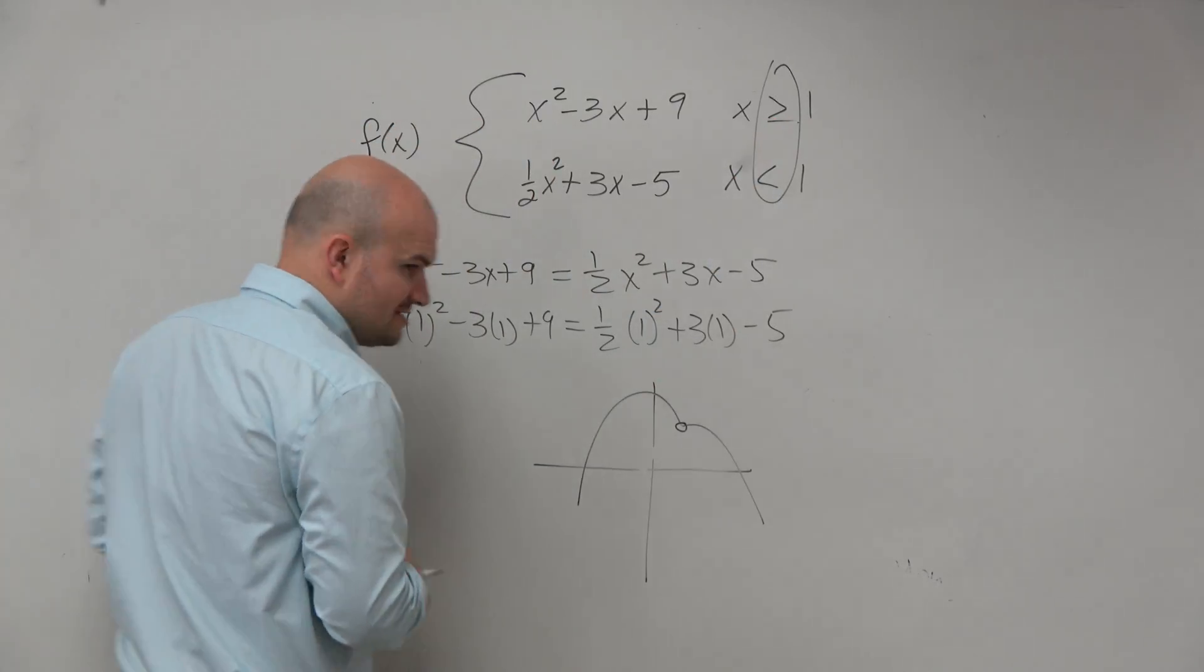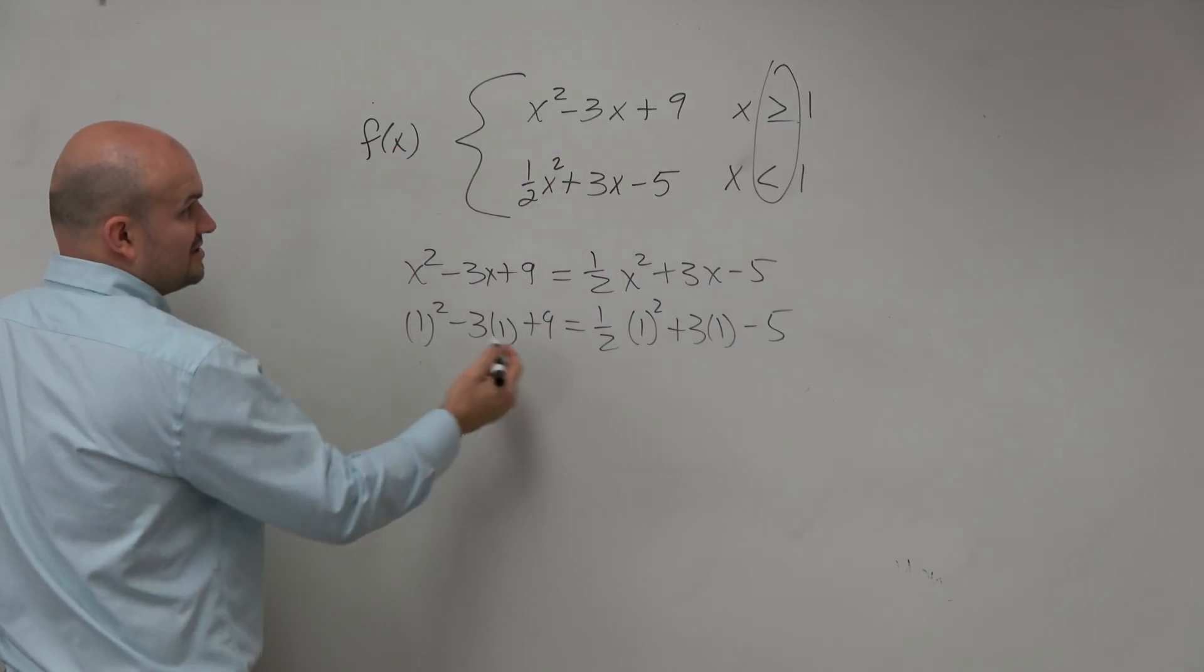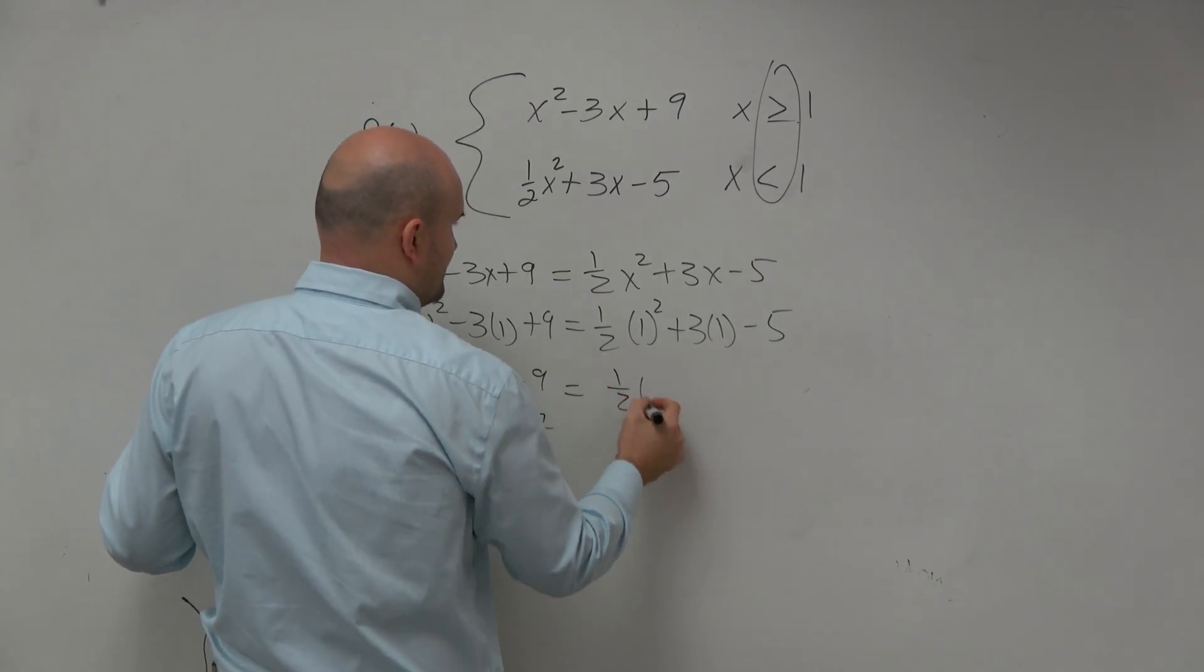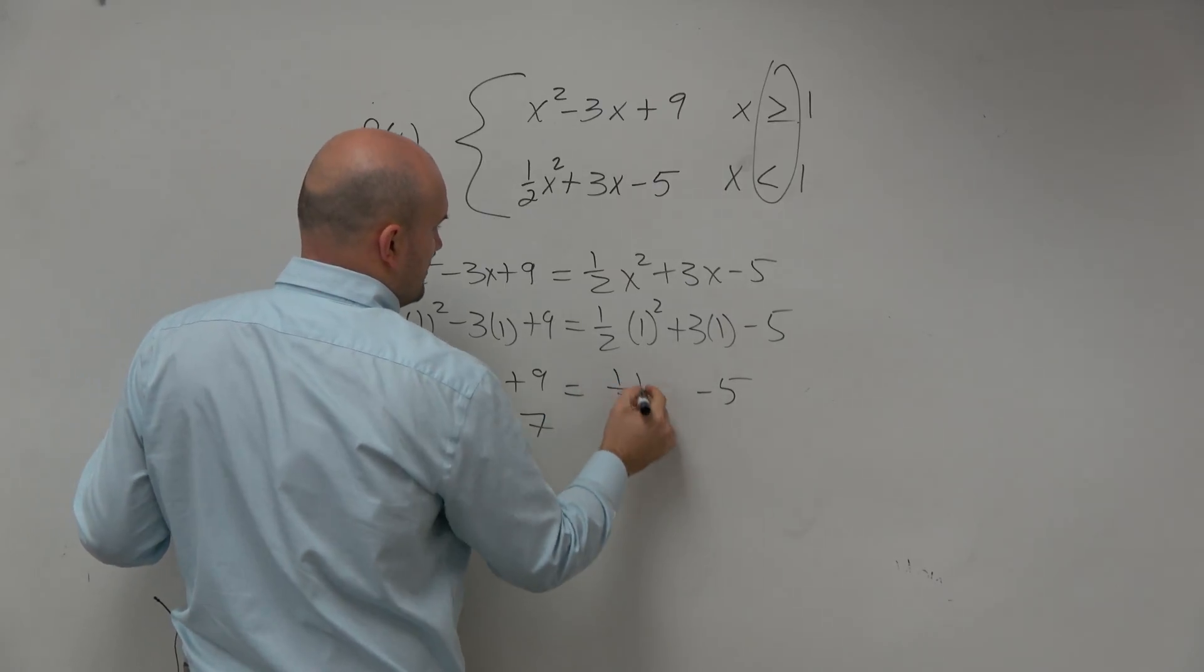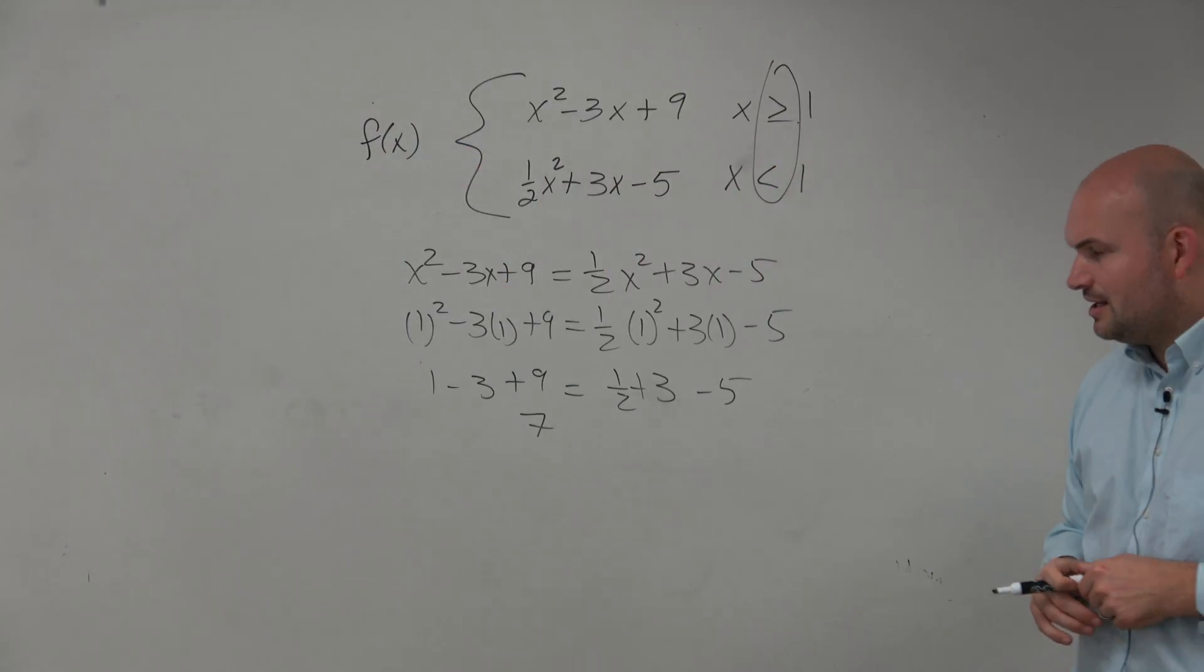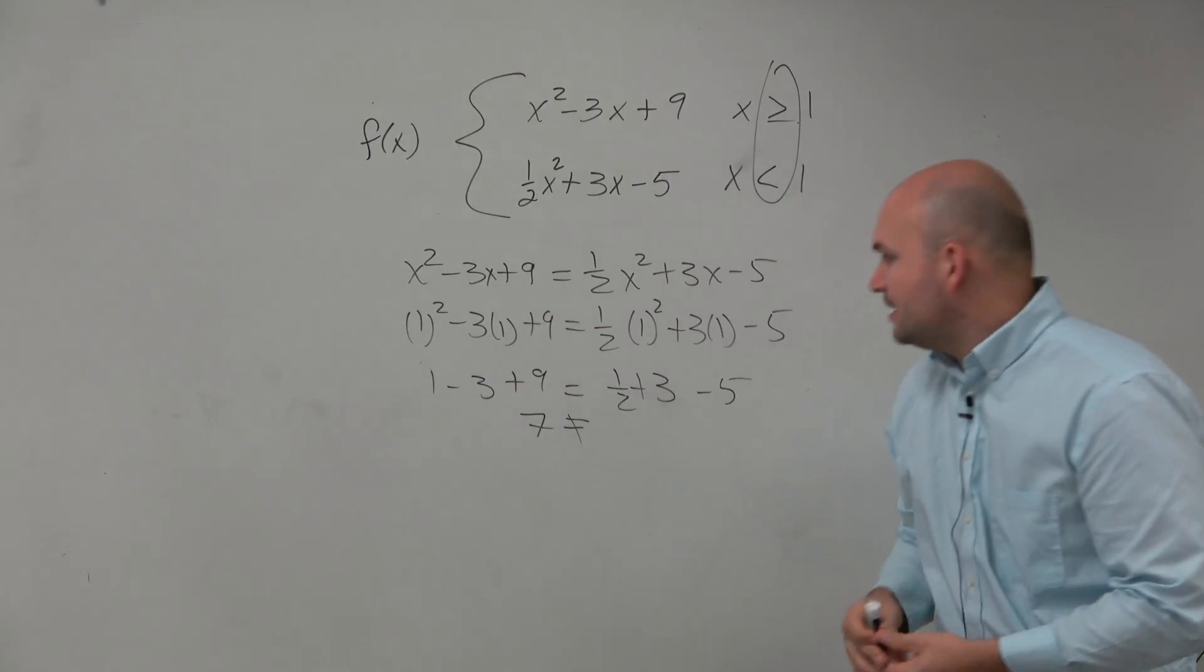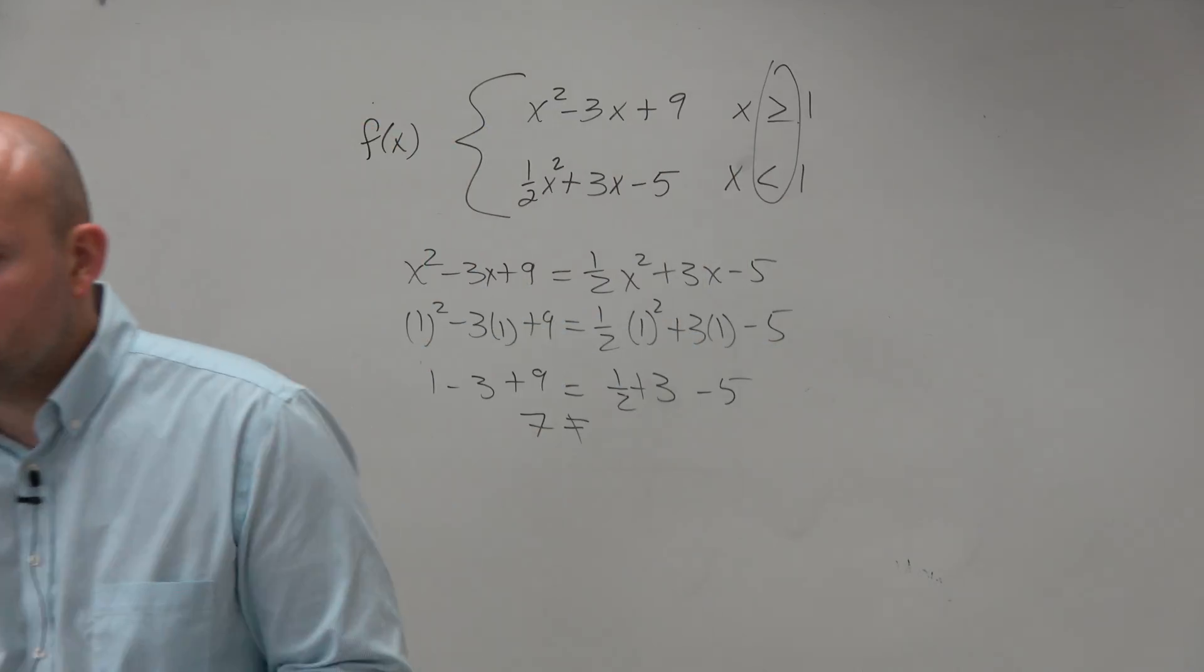Just for S and G, let's go ahead and check. Let's pretend that it was greater than or equal to. So let's do 1 minus 3 plus 9, that's 1 half times 3 minus 5. And obviously, we can see that it's definitely not going to be equal to each other. I'm not even going to work out the fraction, but we know that they're not equal to each other. Because that'd be like 3 half, so it's like negative 1.5. So it's not going to work.